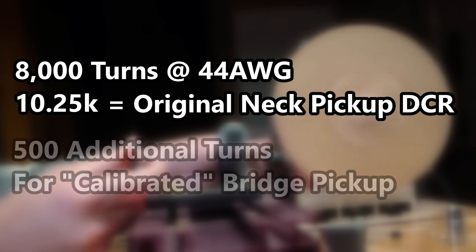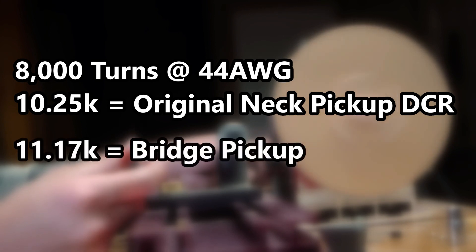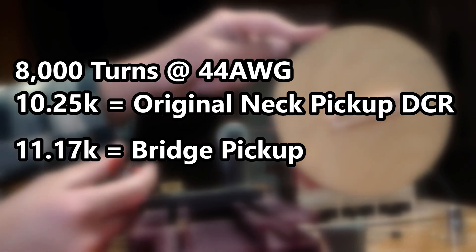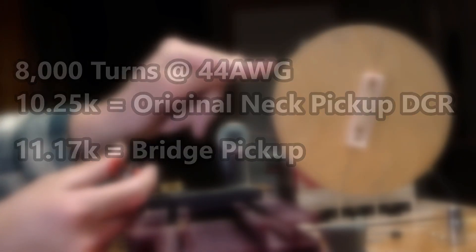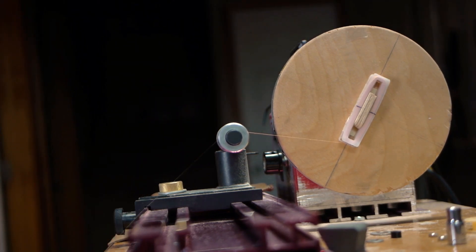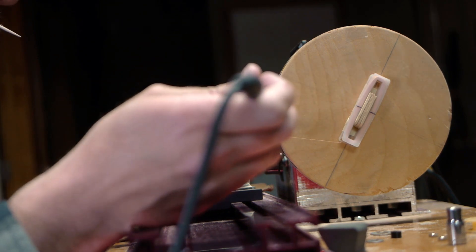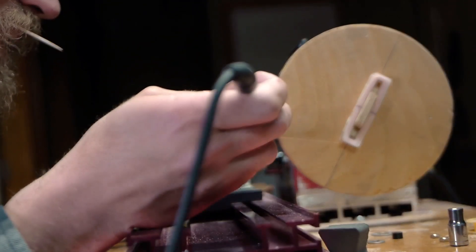10.25k is the DCR of the neck pickup in this set, and since I always overwind the bridge pickup just a little bit, I'm going to go to 8,500 turns for a final DC resistance of 11.17k. The bridge pickup is a naturally quieter position as the strings don't vibrate in as wide of an arc. That means they don't disturb the magnetic field as much as they do in the neck position, which means less electrical current induced in the coil, which means you need to set the pole pieces closer to the strings to compensate for the loss of output.